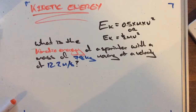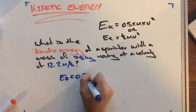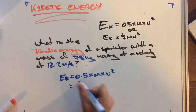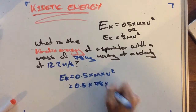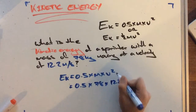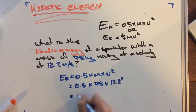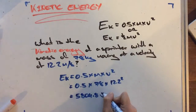We work this out using the formula: kinetic energy is equal to 0.5 times mass times velocity squared, which equals 0.5 times our mass of 78 times our velocity of 12.2 squared. Remember the velocity is squared. This will give us a final answer of 5,804.8 joules.